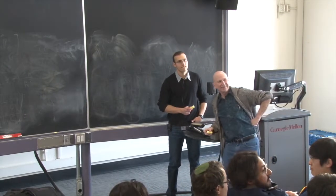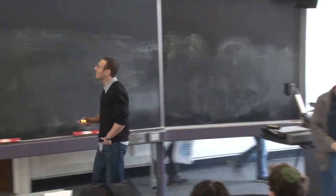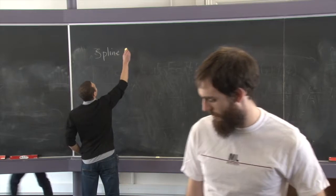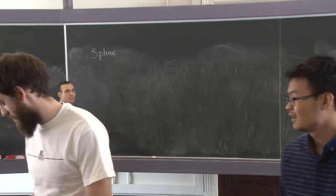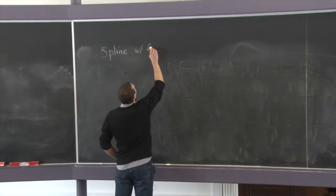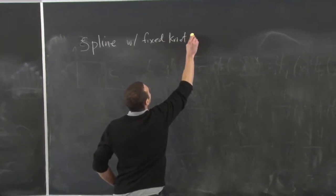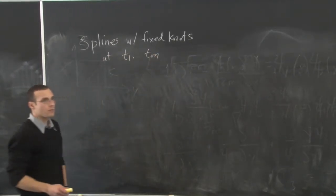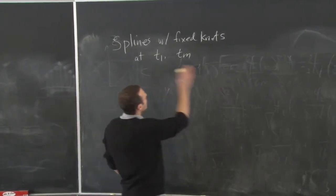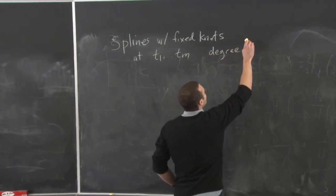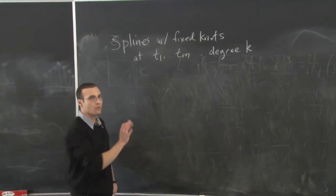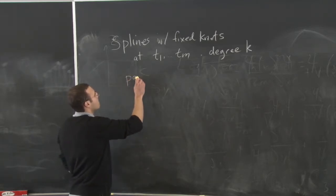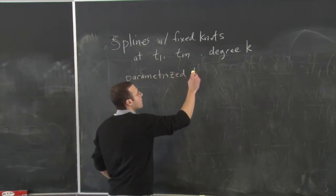Could you maybe just go through the different types of splines and how they appear in the picture? So we have splines with fixed knots. Let's talk about splines with fixed knots. So I write down some knots, and splines with fixed knots at values T1 through Tm, and also let's suppose they have degree K. That's the most fundamental version of a spline, and we can parametrize these by the truncated power basis.